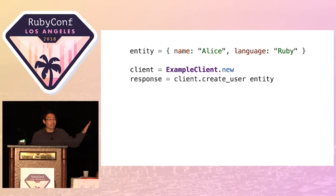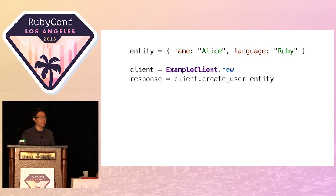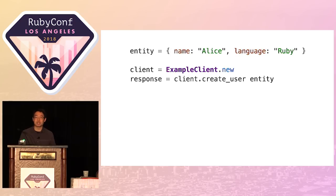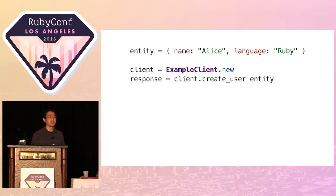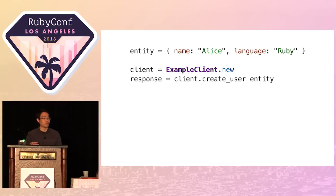Of course, this means that you have to write that class. You have to write that example client class that will provide those methods. You have to build it into a library, and then you have to maintain it, keep it up to date, document it, and all that baggage. So how do you do all that? What are some techniques that go into a good client library? And is that engineering effort worth it?